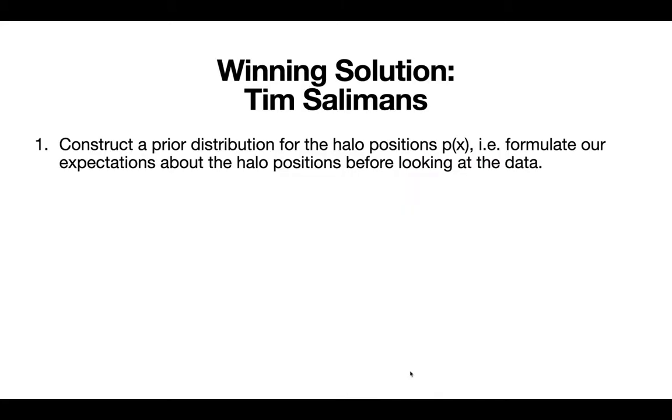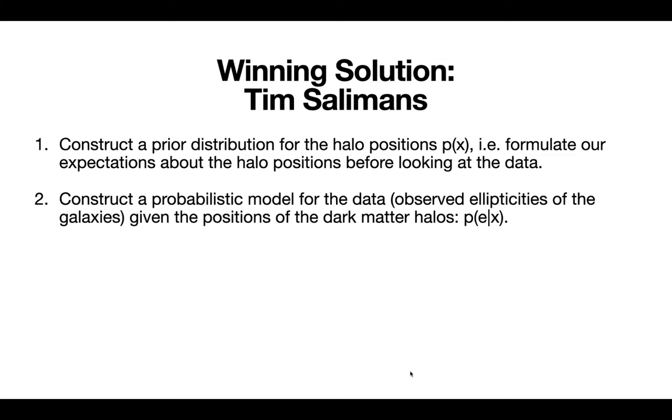So Tim Salomon's solution can be broken into four pieces. The first step is to construct some prior distribution for the halo position, or in other words, we formulate our expectations about the halo positions before looking at the test data. We formulate these expectations on some training data or just looking at the actual data. The second step is to construct a probabilistic model for the data of the observed ellipticities of the galaxies, given the positions of the dark matter halo.